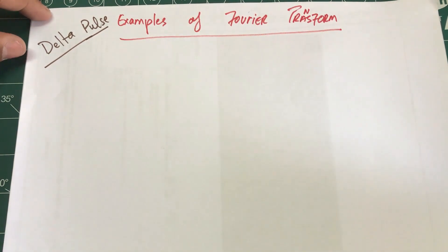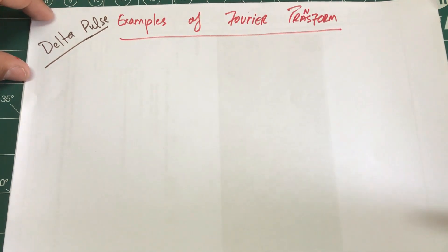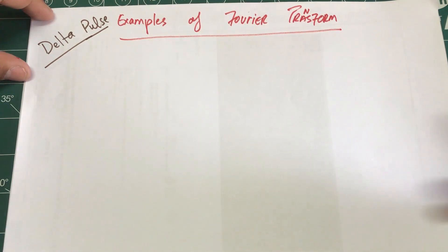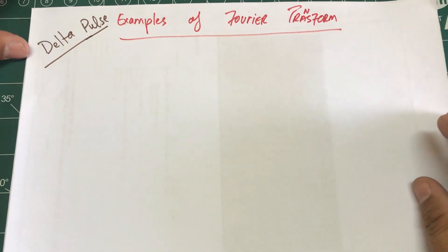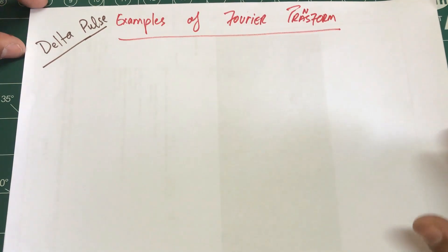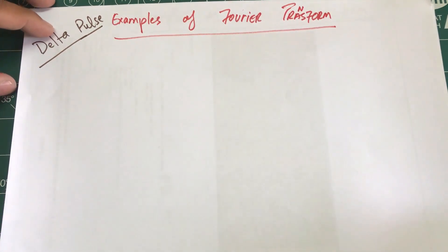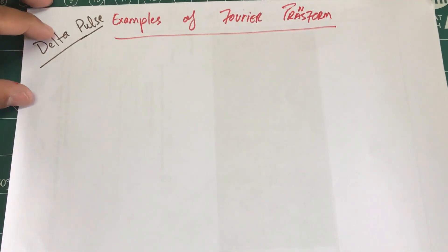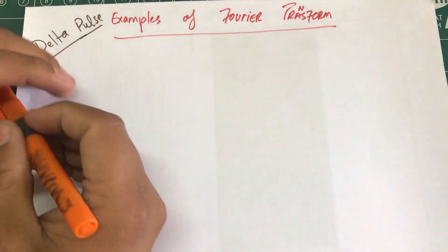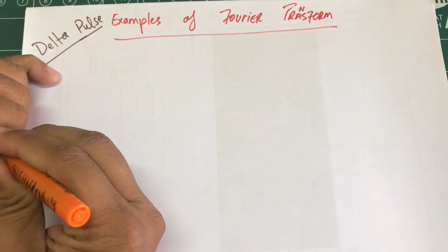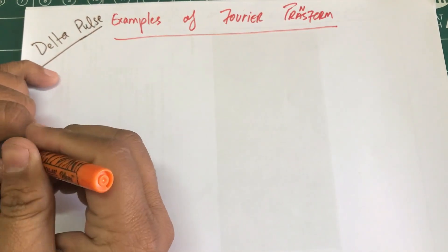Welcome back. In my last video we looked at the derivation of the Fourier transform. In this video we're going to look at some examples. The first and most basic example we're going to look at for the Fourier transform is called a delta pulse or a delta function.